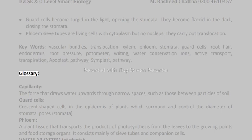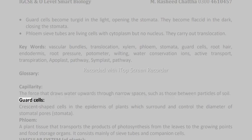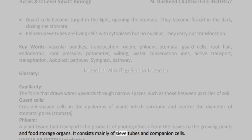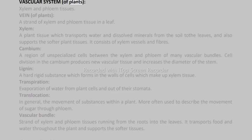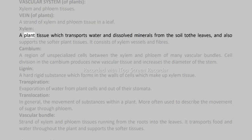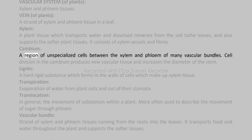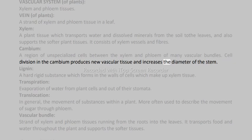Glossary. Capillarity: the force that draws water upwards through narrow spaces, such as those between particles of soil. Guard cells: crescent-shaped cells in the epidermis of plants which surround and control the diameter of stomatal pores (stomata). Phloem: a plant tissue that transports the products of photosynthesis from the leaves to the growing points and food storage organs; it consists mainly of sieve tubes and companion cells. Vascular system: a plant's xylem and phloem tissues. Vein: a strand of xylem and phloem tissue in a leaf. Xylem: a plant tissue which transports water and dissolved minerals from the soil to the leaves and also supports the softer plant tissues; it consists of xylem vessels and fibers. Cambium: a region of unspecialized cells between the xylem and phloem of many vascular bundles; cell division in the cambium produces new vascular tissue and increases the diameter of the stem.